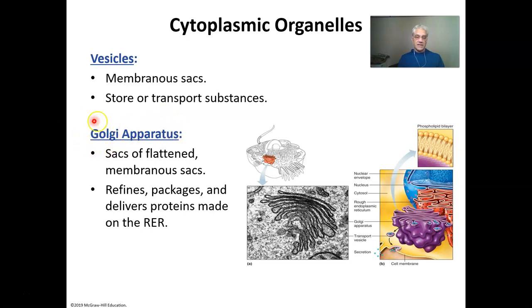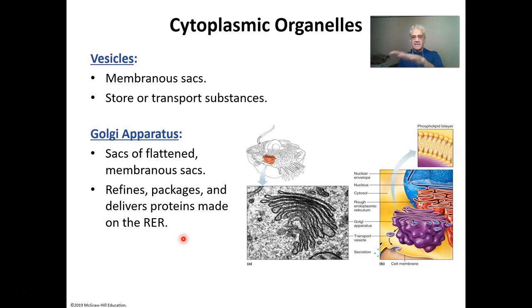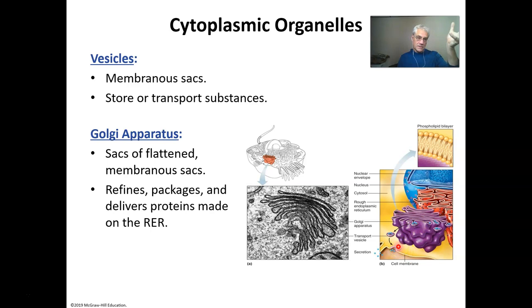The Golgi apparatus — named after Dr. Golgi, also called the Golgi body — consists of flattened membranous sacs next to each other. If your pancreas is making insulin, it's going to go through a Golgi apparatus to be packaged up and sent outside the cell. The Golgi apparatus will create a vesicle around that insulin and transport it to the outer cell membrane, then send the insulin into the bloodstream. So the pathway is: rough endoplasmic reticulum, through the Golgi apparatus, through the outer cell membrane, into the bloodstream.